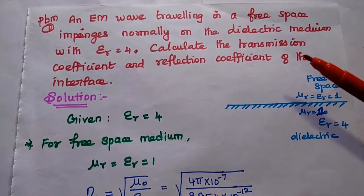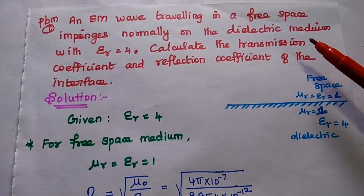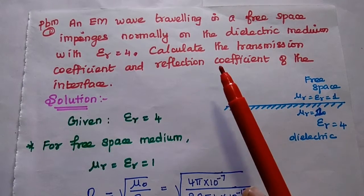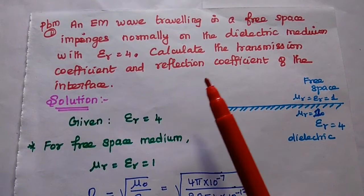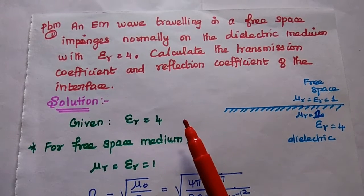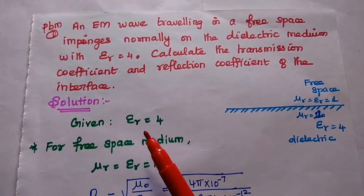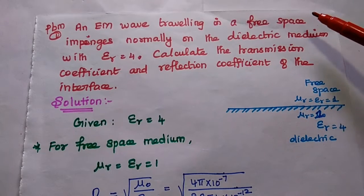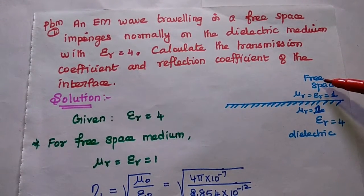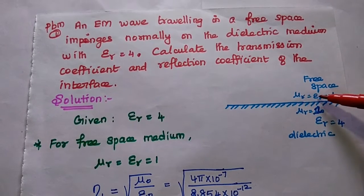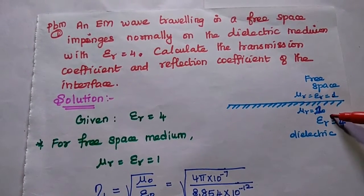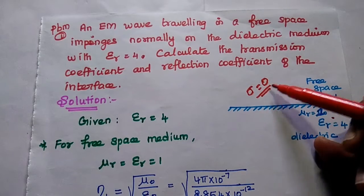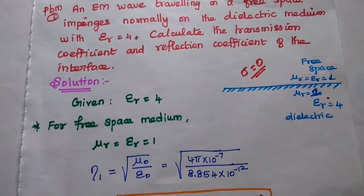Let's solve the first problem. An electromagnetic wave traveling in free space impinges normally on a dielectric medium with epsilon r equal to 4. Calculate the transmission coefficient and reflection coefficient of the interface. In this problem, only the epsilon r value is given, and the other medium is free space, so mu r is equal to epsilon r equal to 1. For the second medium, no sigma value is given, so we consider sigma equal to 0 — meaning it is a perfect dielectric.